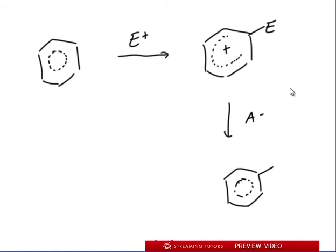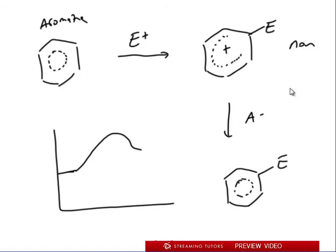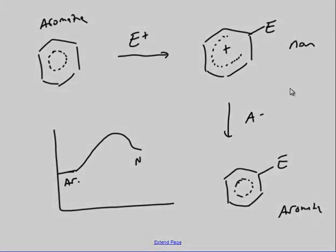This is the energy diagram: you start here, you become something very high in energy because you went from aromatic to non-aromatic, back to aromatic. You're going to go high in energy. This is aromatic, this is non-aromatic.